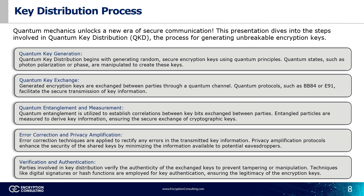Parties involved in key distribution can verify the authenticity of exchanged keys to prevent tampering or manipulation. Techniques like digital signatures or hash functions are employed for key authentication, ensuring the legitimacy of encryption keys. Authentication mechanisms guarantee the integrity of the shared keys, mitigating the risk of unauthorized access or data breach. Key distribution is essential for establishing secure communication channels, and QKD incorporates quantum principles, protocols, and techniques to ensure the confidentiality and integrity of encryption keys.